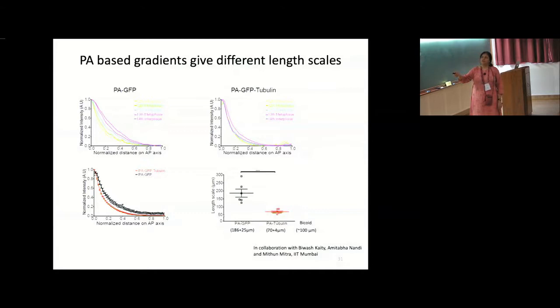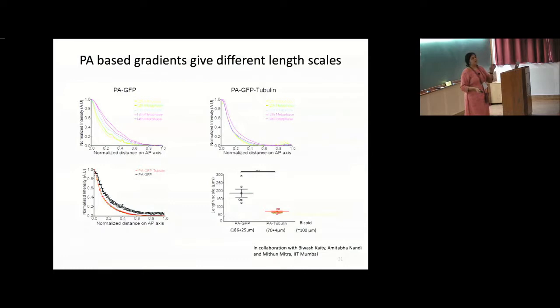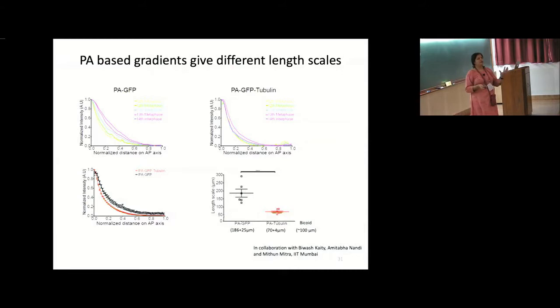PA-GFP increases in spread over time through the syncytial cycles and becomes flatter. PA-tubulin spreads less than PA-GFP. The final summary of their spread at the end of the division cycles: when we estimate length scales, PA-GFP tubulin — which binds to tubulin and also spreads in the cytoplasm — has a lower length scale as compared to PA-GFP alone. This is expected and we can now estimate this through the cortical volume of the embryo.